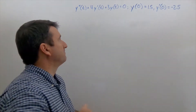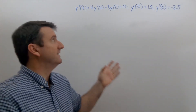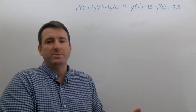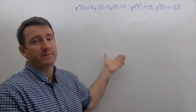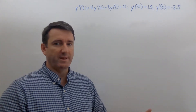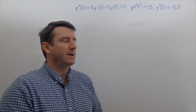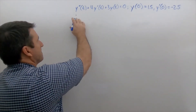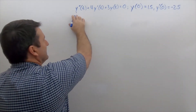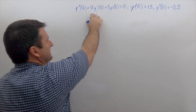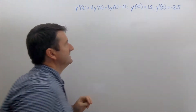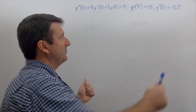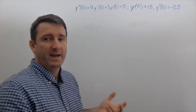Notice first of all that this equation is one that we can solve analytically. I chose it so that we can solve it analytically, then solve it using Euler's method and then see how close we got. So let's first solve this analytically. We've got y'' + 4y' + 3y = 0, with y(0) = 1.5 and y'(0) = -2.5.